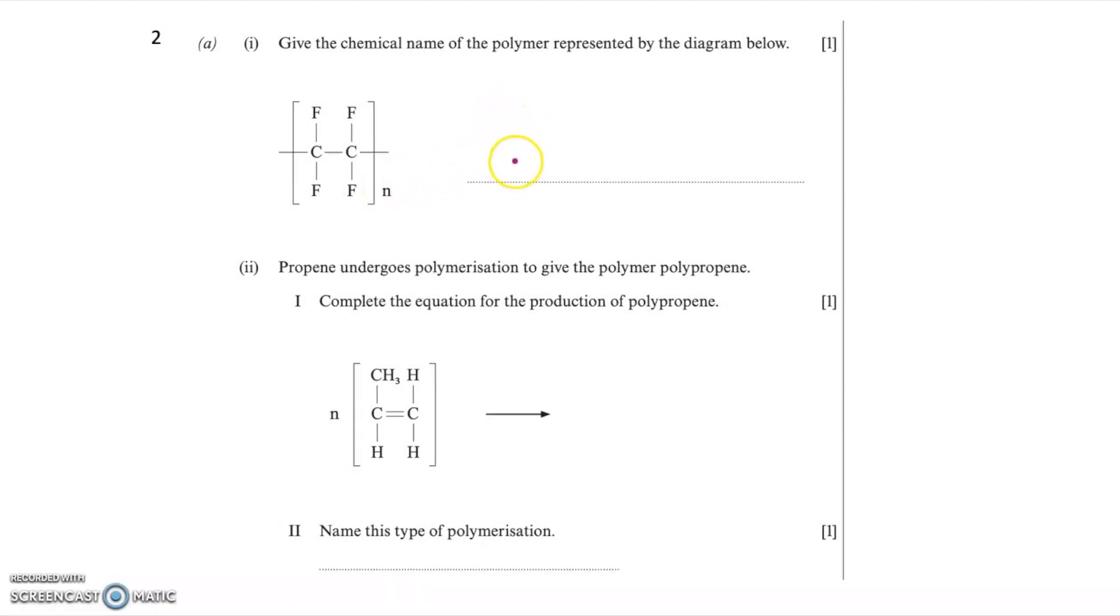So question 2A says, give the chemical name of the polymer represented by the diagram below. So they've drawn the repeating unit here in the question with two carbons and four fluorines, and obviously it's in brackets with an N. Now, it's different to polythene because of the four fluorines, and this polymer is called polytetrafluoroethene. Tetra means four. And polytetrafluoroethene is known as PTFE, and its brand name is Teflon, and it's often used for non-stick frying pans.